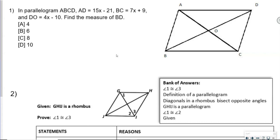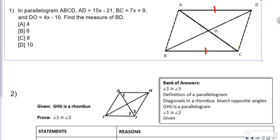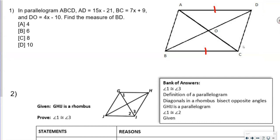AD and BC are opposite sides in a parallelogram, so we know that these opposite sides are congruent. We also know that the diagonals bisect each other, so DO is congruent with BO. That means if we're trying to find the length of the whole diagonal, we can find X and then plug X into DO and multiply that by 2.